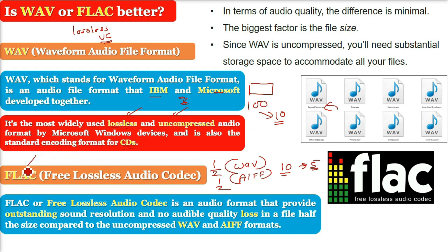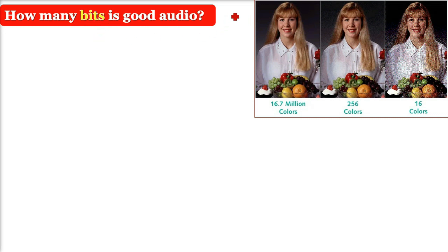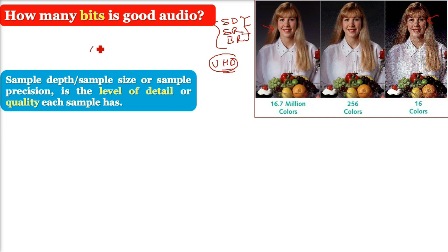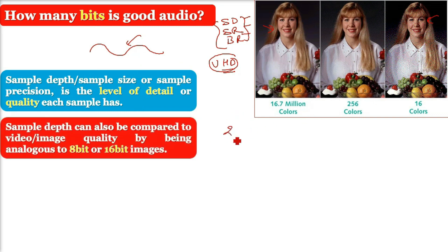How many bits make good audio? Sample depth, sample rate, and bit rate all govern an audio signal. Sample depth (also called sample size or sample precision) is the level of detail or quality of each sample — analogous to image color depth. Just as 16.7 million colors (higher bit depth) produces a better image than 16 colors, more bits in audio means higher quality. For 8-bit, you have 2^8 = 256 levels; 16-bit gives 2^16 levels of detail.